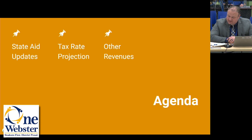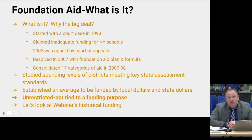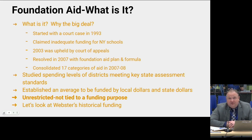I say that tongue-in-cheek because could state aid and tax rate projections ever be that simple? First we'll dive into state aid with a historical look. I want to focus on foundation aid because that was a big deal this year. What is it? Why the big deal? It started in 1993 — a lawsuit claiming inadequate funding for New York schools. It was upheld by the Court of Appeals in 2003, and in 2007 under Governor Elliot Spitzer a plan was created.